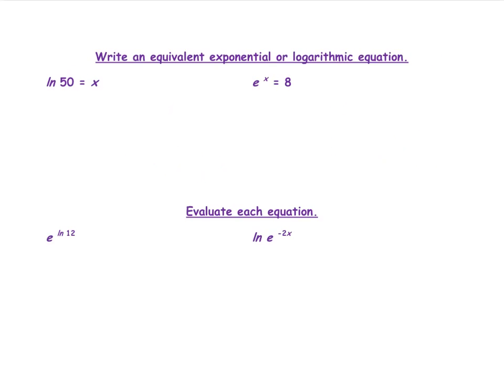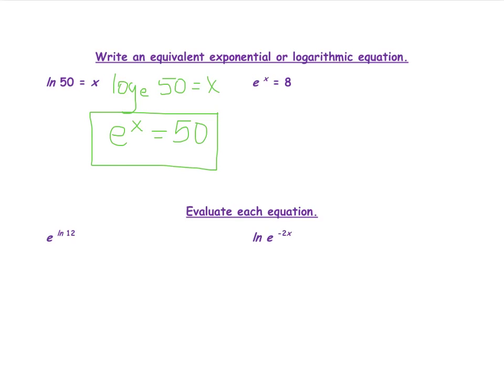Now we are going to learn how to write a natural log function as a base e function and vice versa. This is very similar to taking a log function and rewriting it as an exponential function. Remember, natural log is another way of expressing log base e. So first we rewrite as log base e: log base e of 50 equals x. Then we write it in exponential form — the base is e, the exponent is x, and that equals the argument, which is 50.